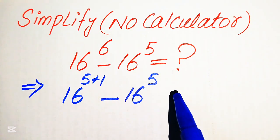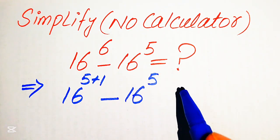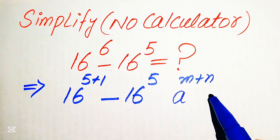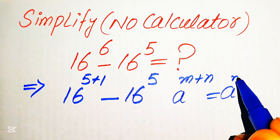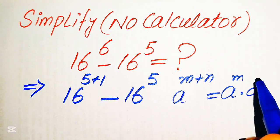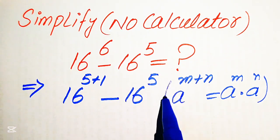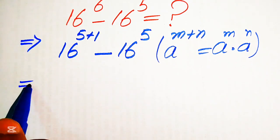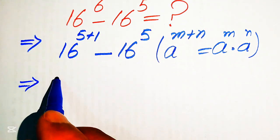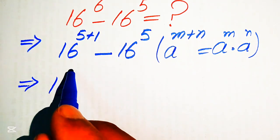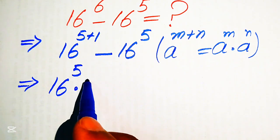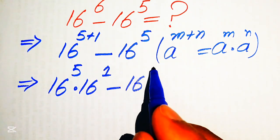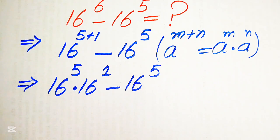Now we will apply the exponent law: you know that a to the power of m plus n equals a to the power of m multiplied by a to the power of n. According to this exponent law, we break this exponent and it will be written as 16 to the power of 5 multiplied by 16 to the power of 1, minus 16 to the power of 5.